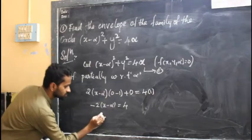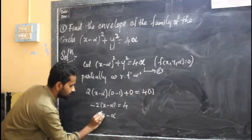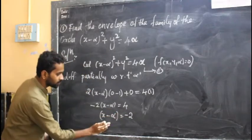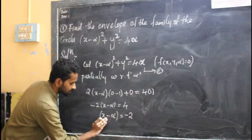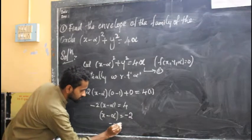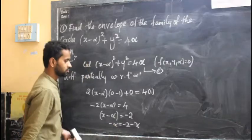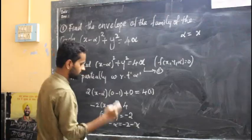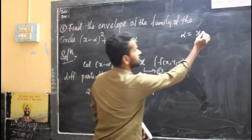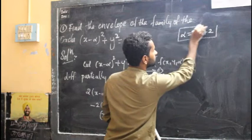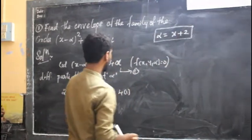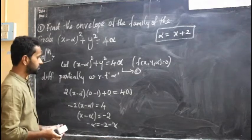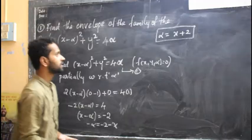So, this becomes x minus alpha equal to minus 2. Now, I can find alpha: minus alpha equals minus 2 minus x, so finally alpha equals x plus 2 — the minus signs cancel and x plus 2 will be the value of alpha. Now I have found alpha, which is dou f by dou alpha equal to 0.